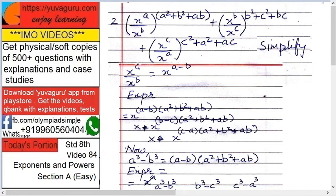One basic algebraic formula is x raised to a upon x raised to b equals x raised to a minus b. This formula we will be using now. So x raised to a minus b, see this first one.